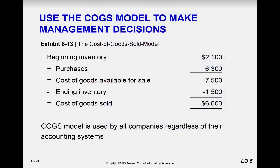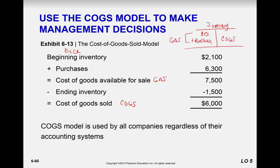Now let's discuss cost of goods sold in making decisions, which should also be in your Excel template. Beginning inventory plus purchases equals goods available for sale; subtract ending inventory to get cost of goods sold. In T-account form: beginning balance plus purchases — including freight-in, reduced by purchase discounts and returns and allowances — gives goods available for sale, and then cost of goods sold comes out of inventory, leaving the ending balance.